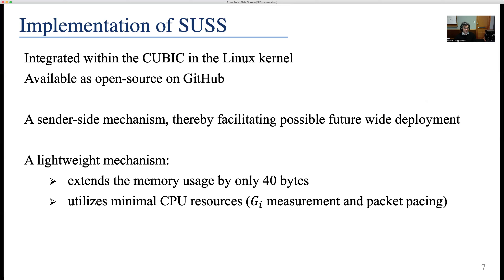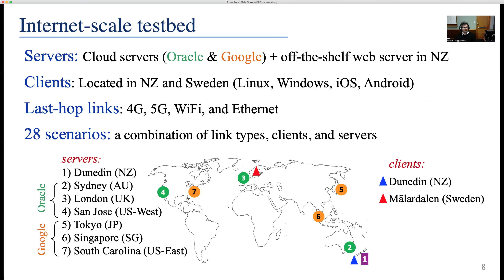SOS is a sender-side mechanism that facilitates possible future wide deployments. It is lightweight and extends memory usage by only 40 bytes per each connection, and it also has low CPU usage. For testing SOS, we used a diverse set of cloud servers and off-the-shelf hardware connected through various types of links. Our Internet-scale testbed consists of servers located in seven different geographical locations. Clients are in Sweden and New Zealand, connected to the Internet via 4G, 5G, Wi-Fi, and Ethernet. This combination forms 28 testing scenarios with varying round trip time, bottleneck bandwidth, and cross traffic patterns.